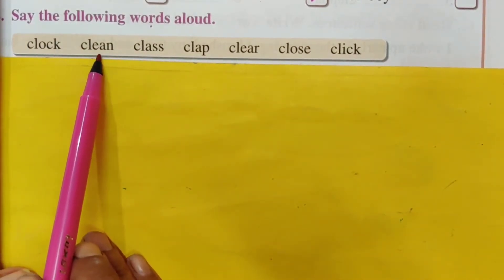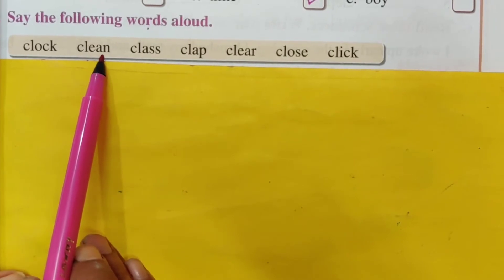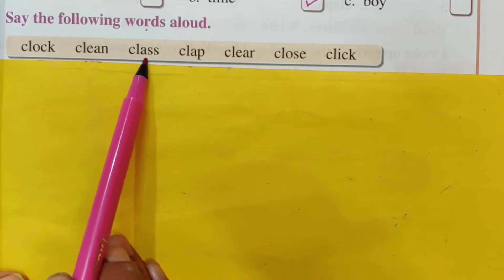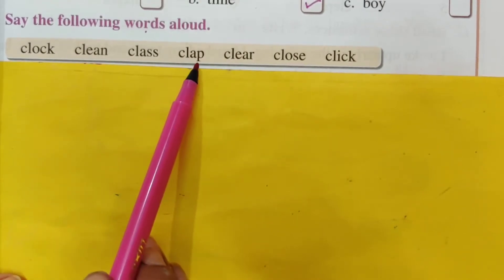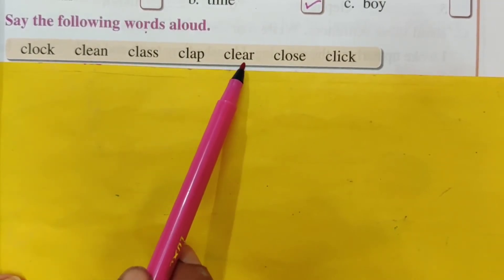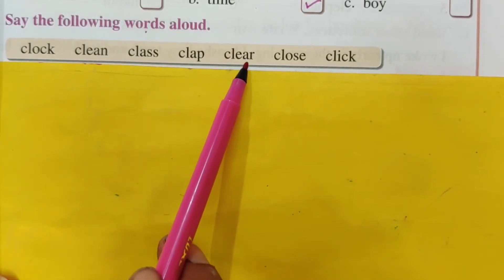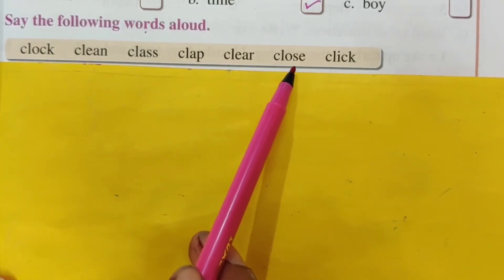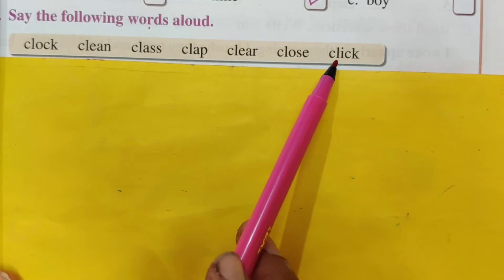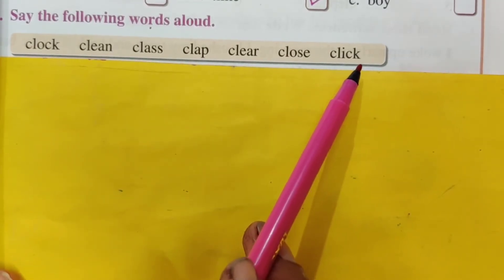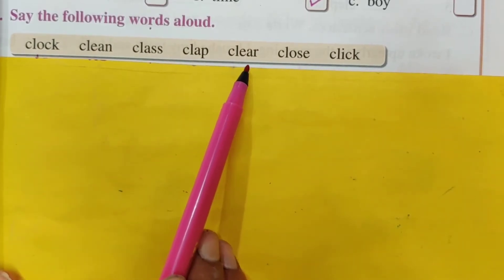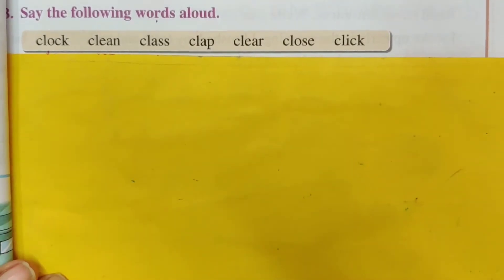Read these words aloud: Clock — C-L-O-C-K. Clean — C-L-E-A-N. Class — C-L-A-S-S. Clap — C-L-A-P. Clear — C-L-E-A-R. Close — C-L-O-S-E. Click — C-L-I-C-K. Once again: Clock, Clean, Class, Clap, Clear, Close, Click. Like that you have to read the words.